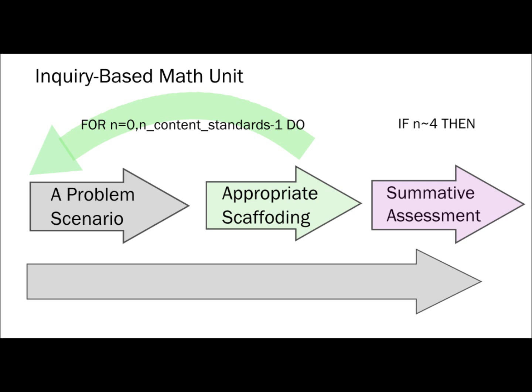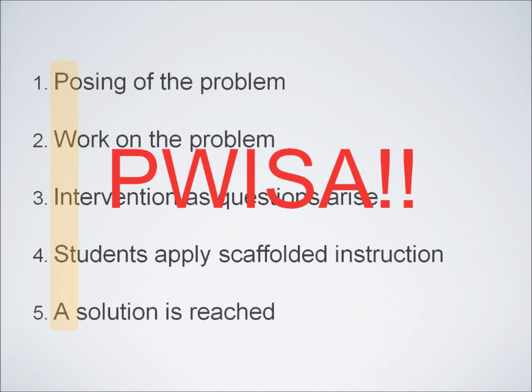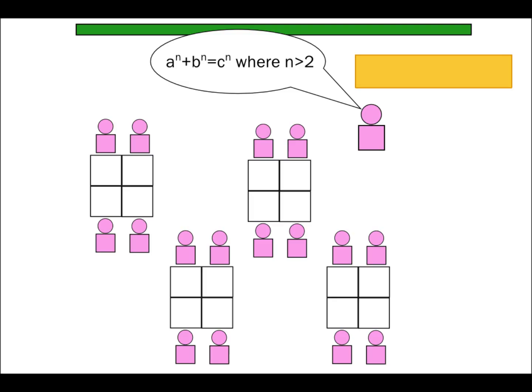This screencast will take a look at what a problem-based learning unit looks like from start to finish. There are five general pieces to a good problem-based learning unit: the posing of the problem, work on the problem, intervention as questions arise, students apply the scaffolded instruction to the problem, and a solution is reached. Okay, maybe no acronyms, but let's take a look at each of these pieces.